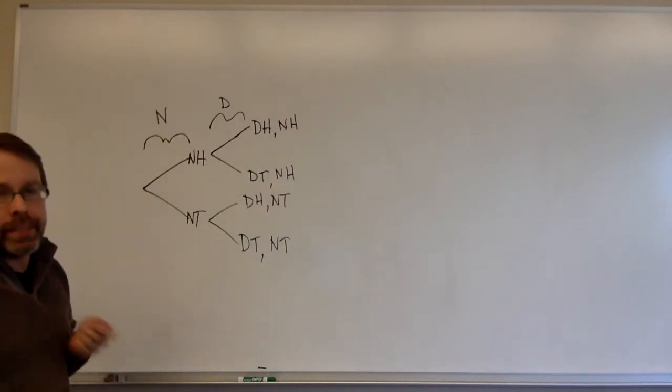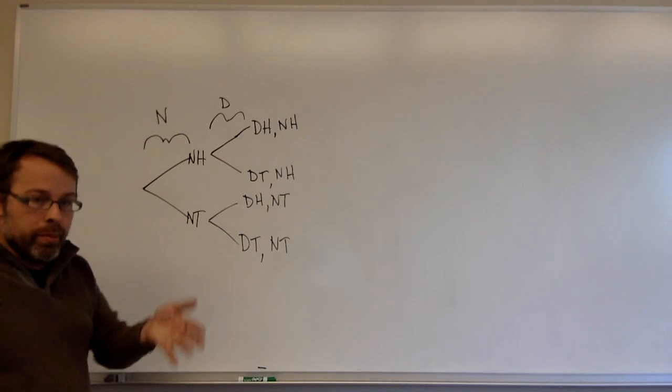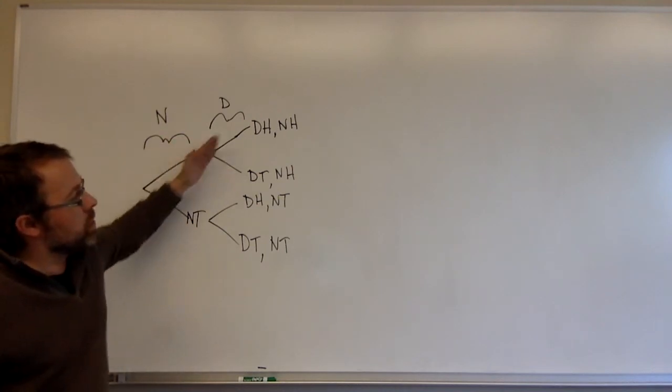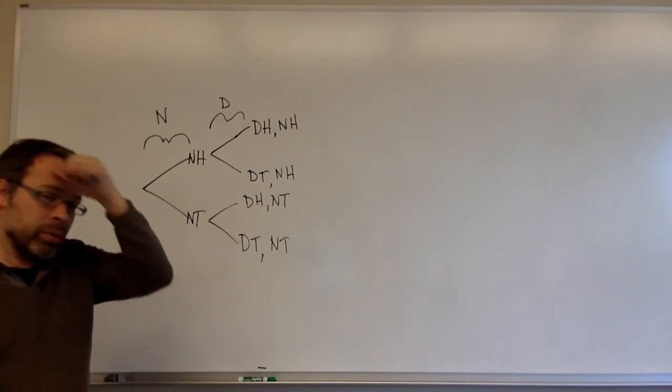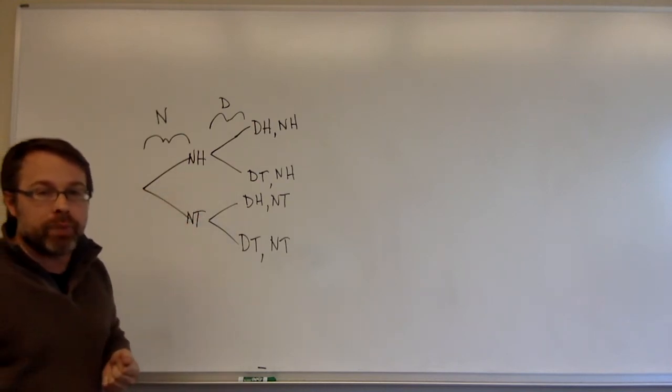But actually, it doesn't matter. They could happen at the same time. We could flip the nickel and the dime at the same time and still use this pathway. That's what we're going to be doing when we draw these pathways out. In the next videos, we'll be talking about how we can use that to calculate probabilities.